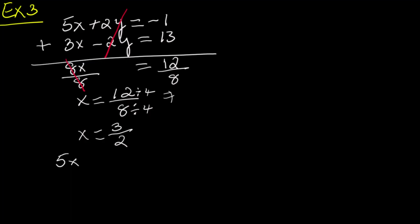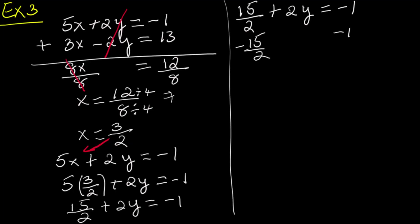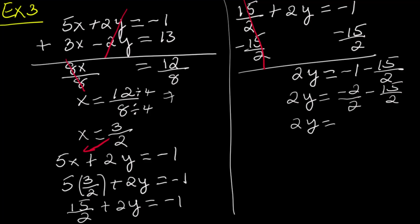Now let's plug that into the first equation to find y: 5x plus 2y equals negative 1. Replace x with 3 over 2: 5 times 3 over 2 plus 2y equals negative 1. 5 times 3 is 15, so we get 15 over 2 plus 2y equals negative 1. Subtract 15 over 2 from both sides: 15 over 2 and negative 15 over 2 cancel out. 2y equals negative 1 minus 15 over 2. 2 is the common denominator; rewrite negative 1 as negative 2 over 2. We have 2y equals negative 2 over 2 minus 15 over 2, which gives 2y equals negative 17 over 2.